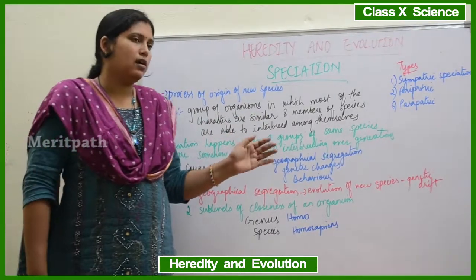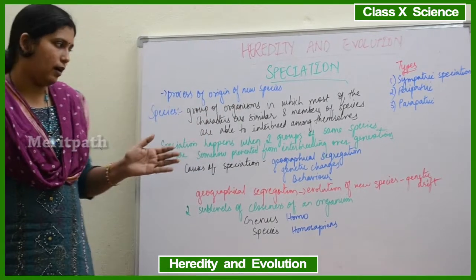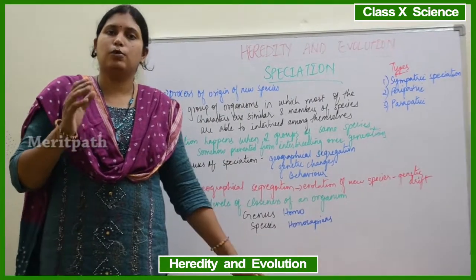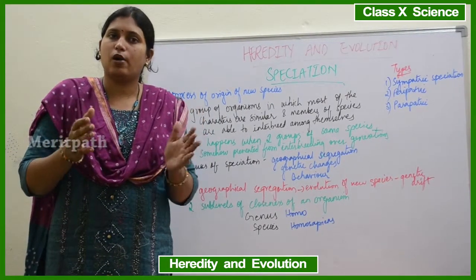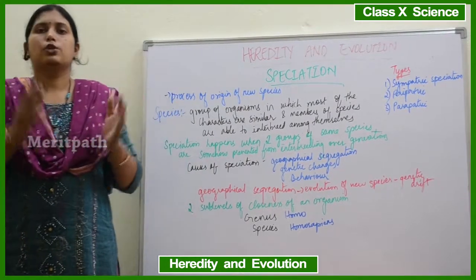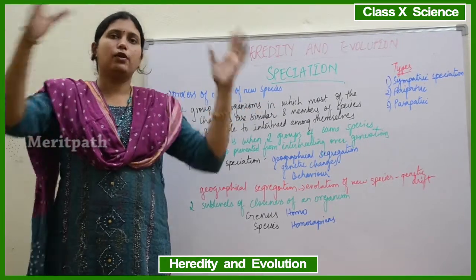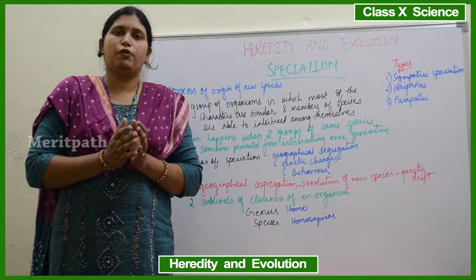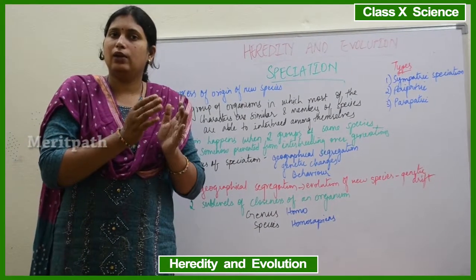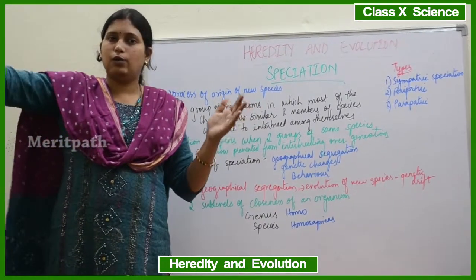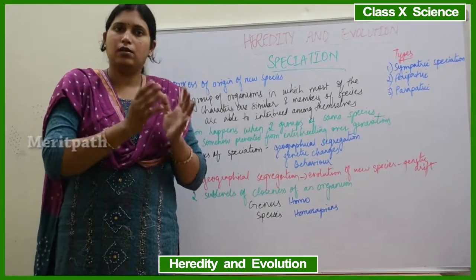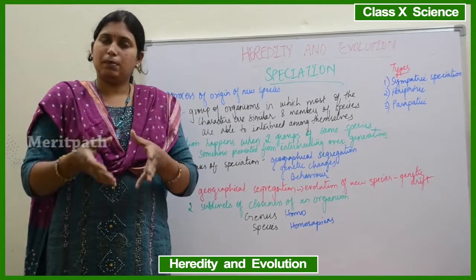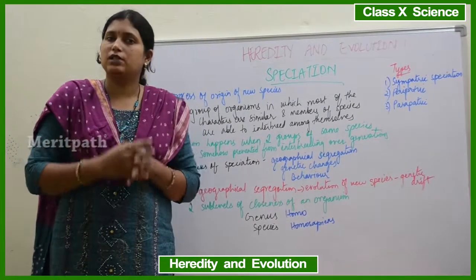Speciation occurs because of geographical segregation — that is allopatric speciation. For example, let's take beetles. Beetles live on bushes, which are small trees, and they feed on leaves. If these bushes are spread over a large mountain range, there will be a large population of beetles from one corner to another. But one group of beetles will stay in one particular area only and cannot travel from one corner of the mountain to another. So the subpopulations will interbreed only with each other.